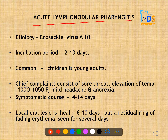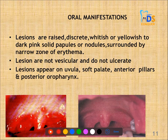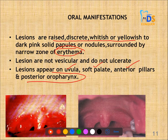Coming to acute lymphonodular pharyngitis, the etiology is Coxsackie virus A10. Incubation is 2 to 10 days. It is most commonly seen in children and young adults. The elevation of temperature will be high, ranging from 100 to 105 degrees Fahrenheit. Symptoms may last for 4 to 14 days and local oral lesions heal in 6 to 10 days, though erythema can persist for several days. Oral manifestations show raised, discrete, whitish solid papules surrounded by erythema, mostly occurring on the uvula, soft palate, anterior pillars and posterior oropharynx.